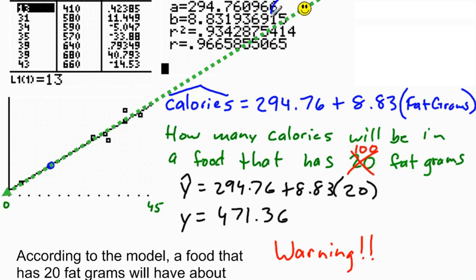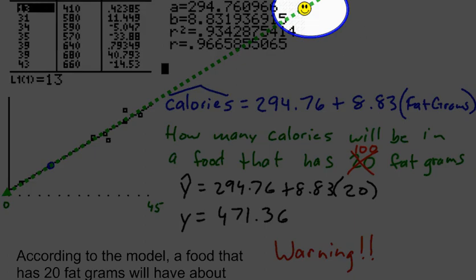I really shouldn't, because my data starts at 13 and goes up to 43. If I make a prediction beyond 43 for my fat grams, what I have done is I am trying to make a prediction that is outside the scope of my model.